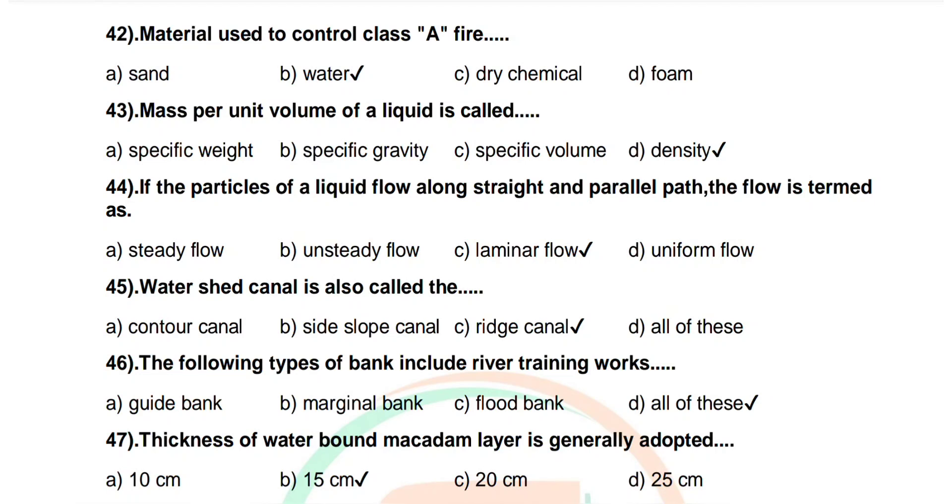Question number 47: Thickness of water bound macadam layer is generally adopted. Options are 10 cm, 15 cm, 20 cm, 25 cm. Correct answer: 15 cm.